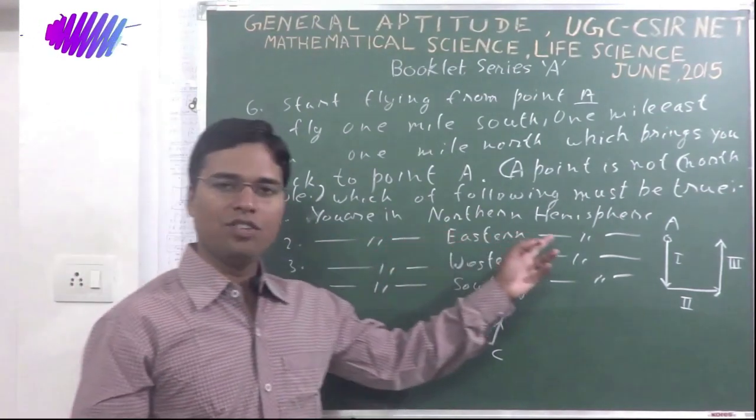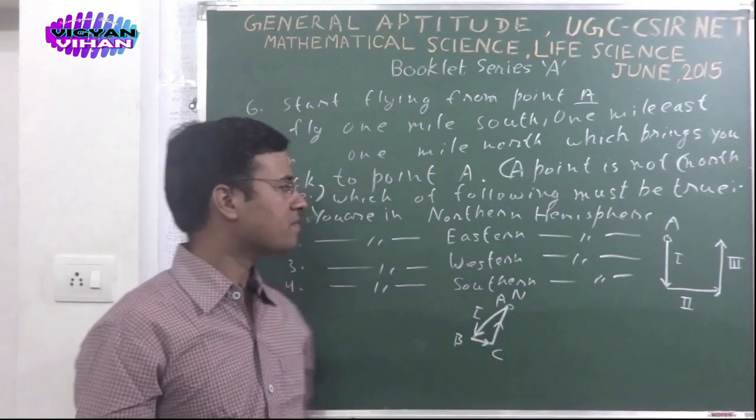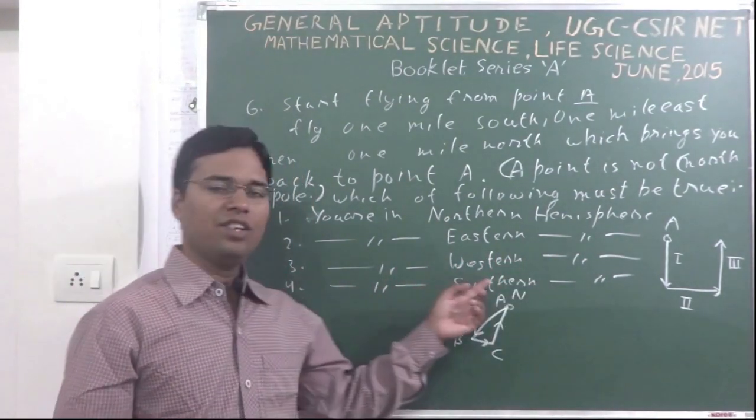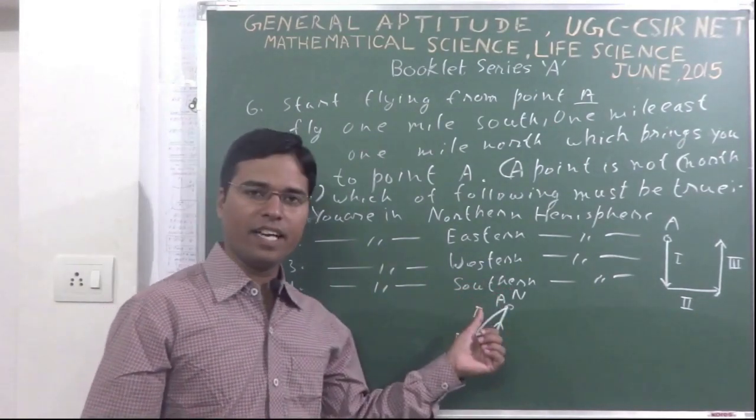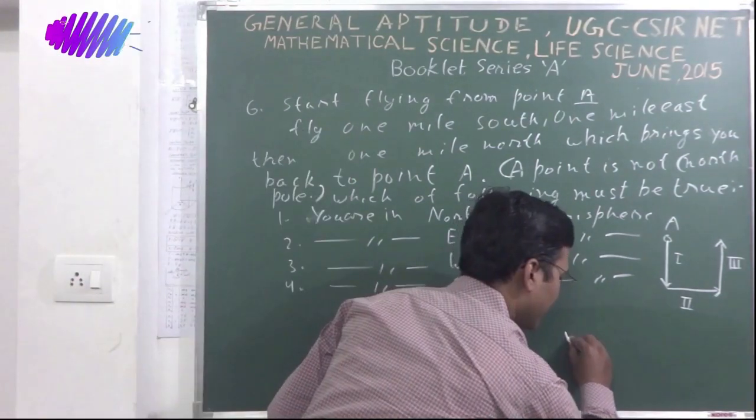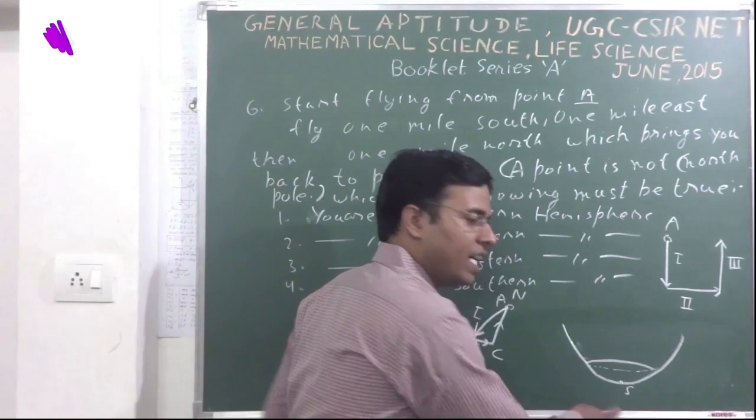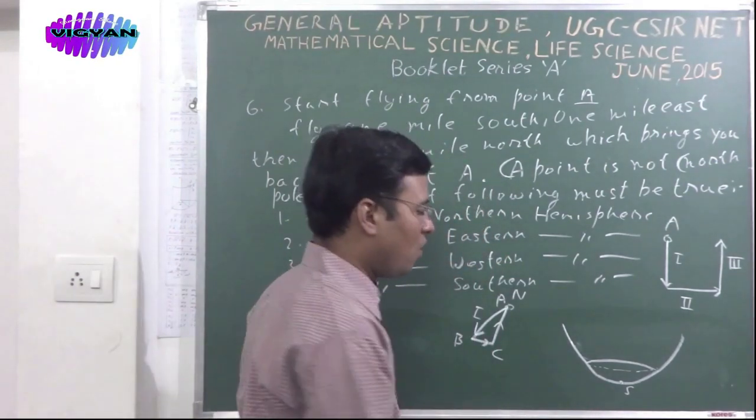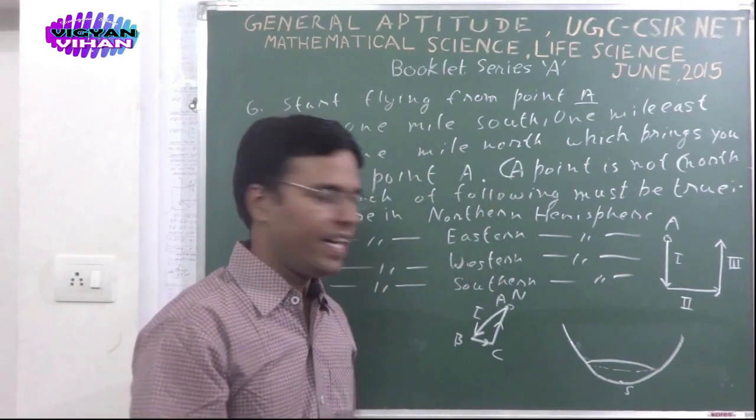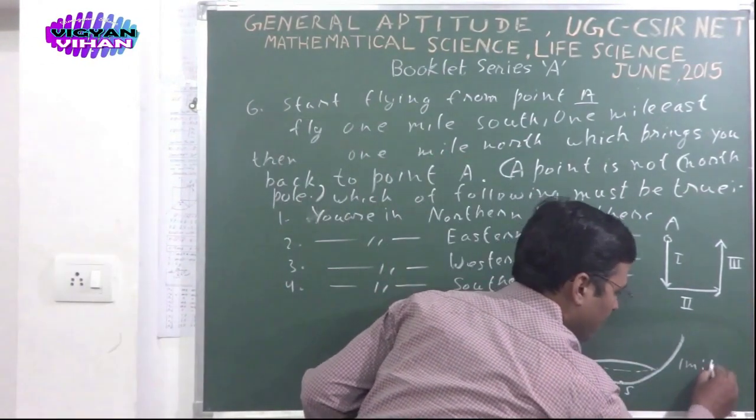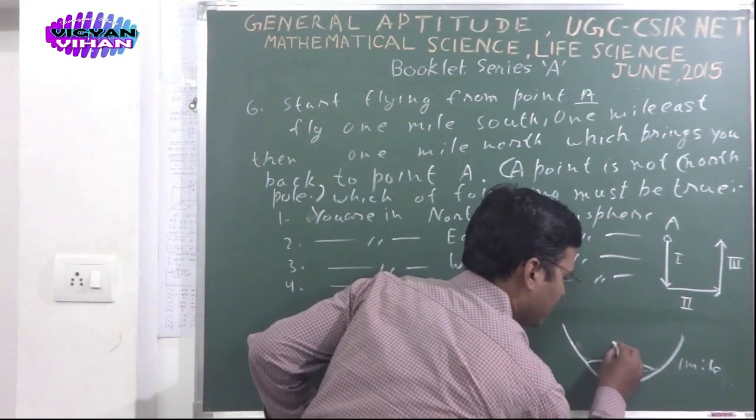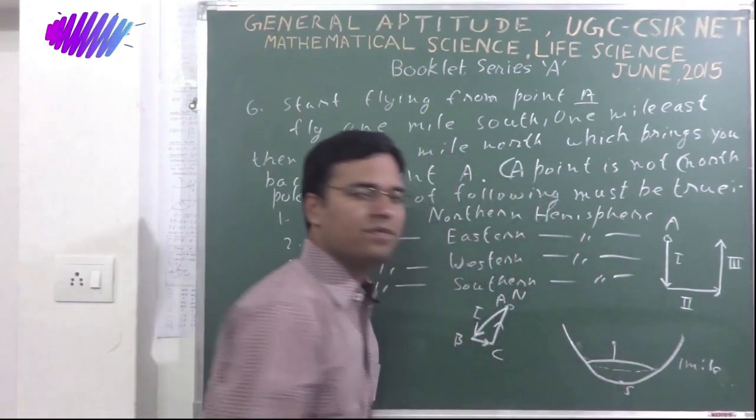Let's see the given options in this problem. First, you are in Northern Hemisphere. Second, you are in Eastern Hemisphere. Third, Western Hemisphere. Fourth, Southern Hemisphere. Now, let's assume in Southern Hemisphere, you are in some nearby area of Southern Pole. If a circle which has its circumference 1 mile and your initial position A is 1 mile north from some arbitrary point of this circle.